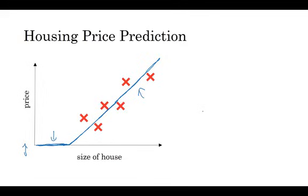So you can think of this function that you've just fit to housing prices as a very simple neural network. It's almost the simplest possible neural network. Let me draw it here. We have, as the input to the neural network, the size of a house, which we call x. It goes into this node, this little circle, and then it outputs the price which we call y. So this little circle, which is a single neuron in a neural network, implements this function that we drew on the left.